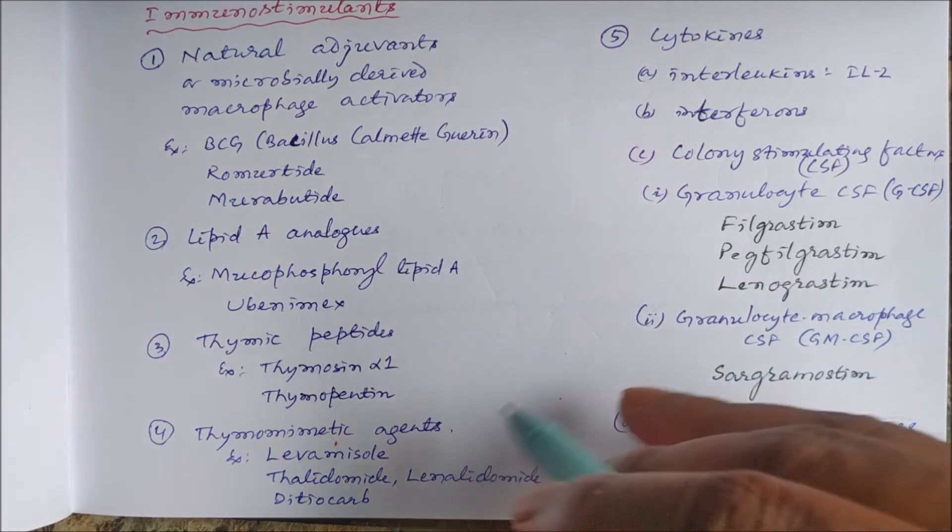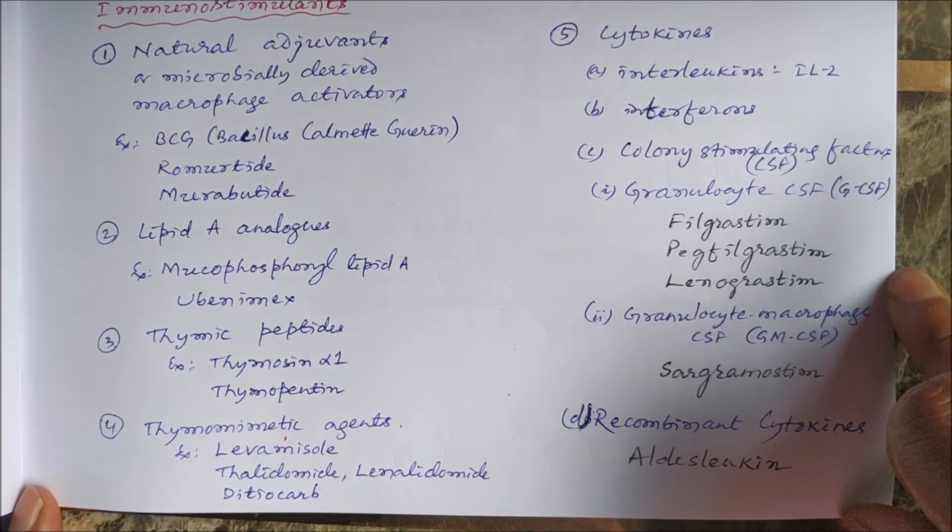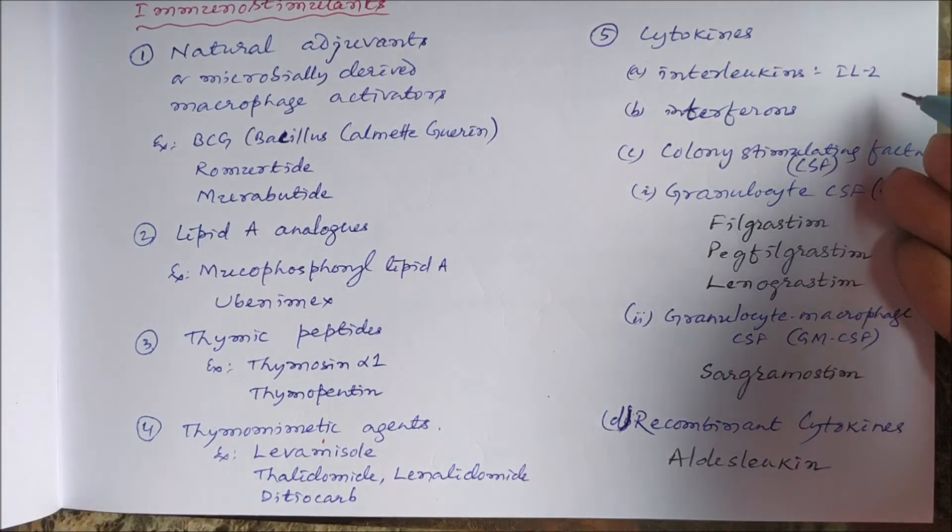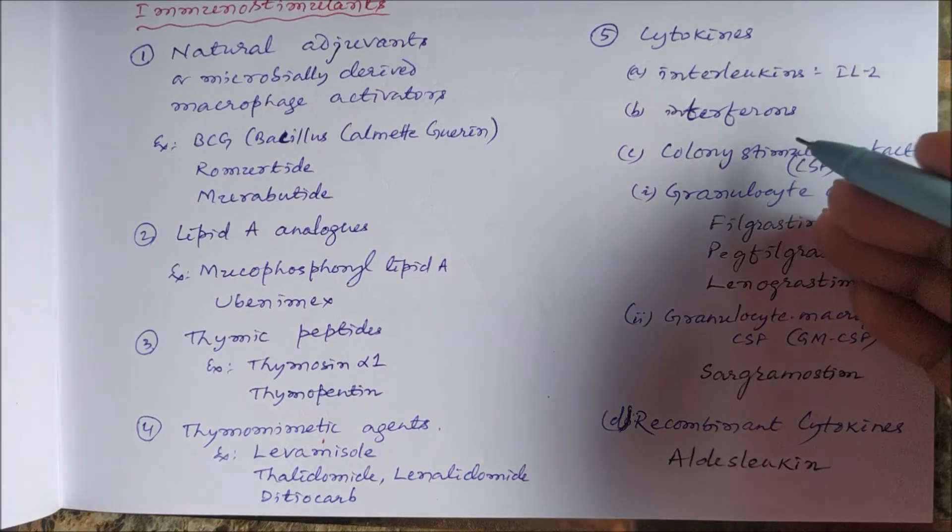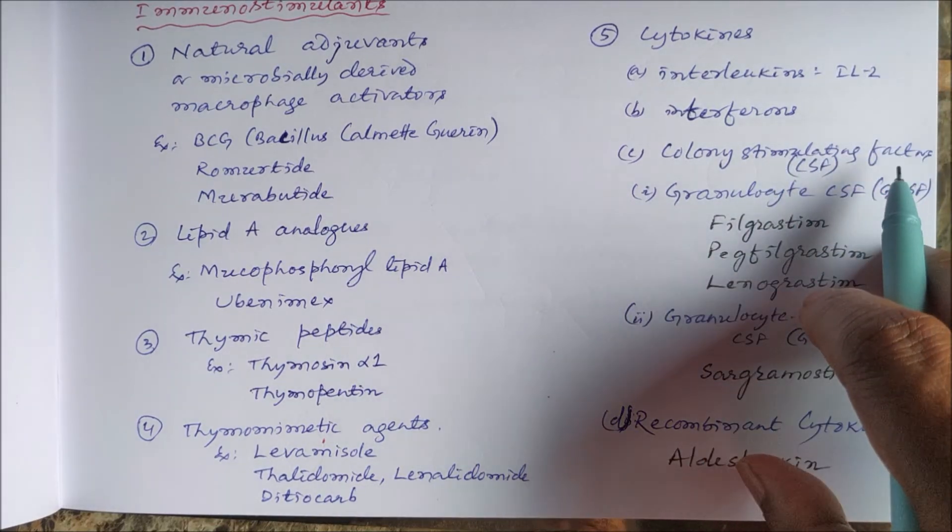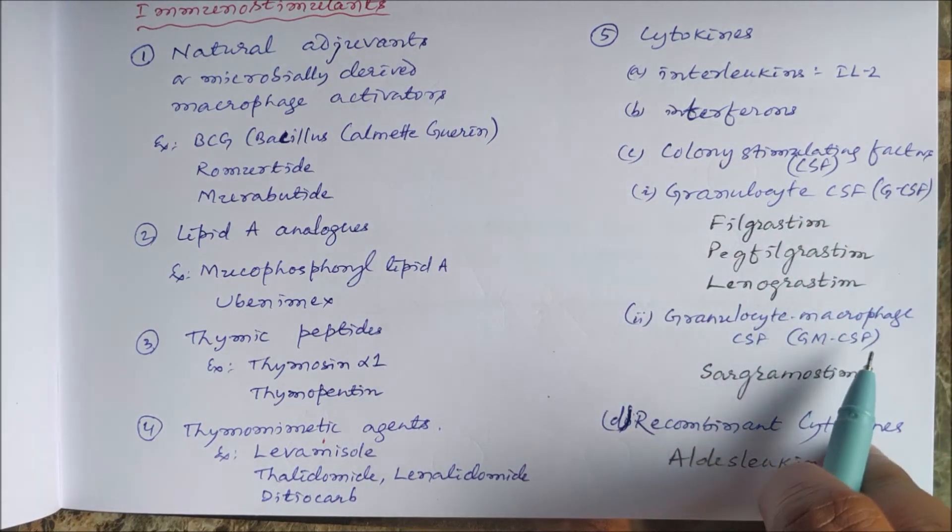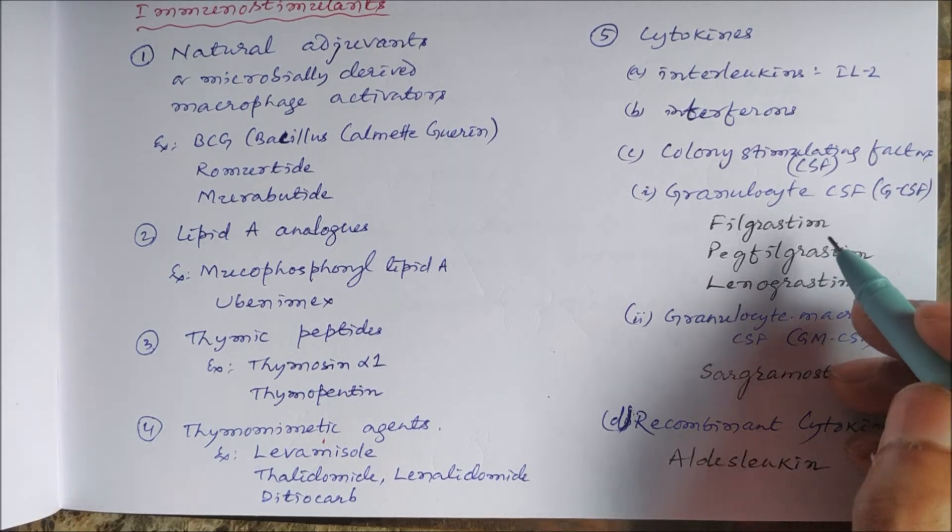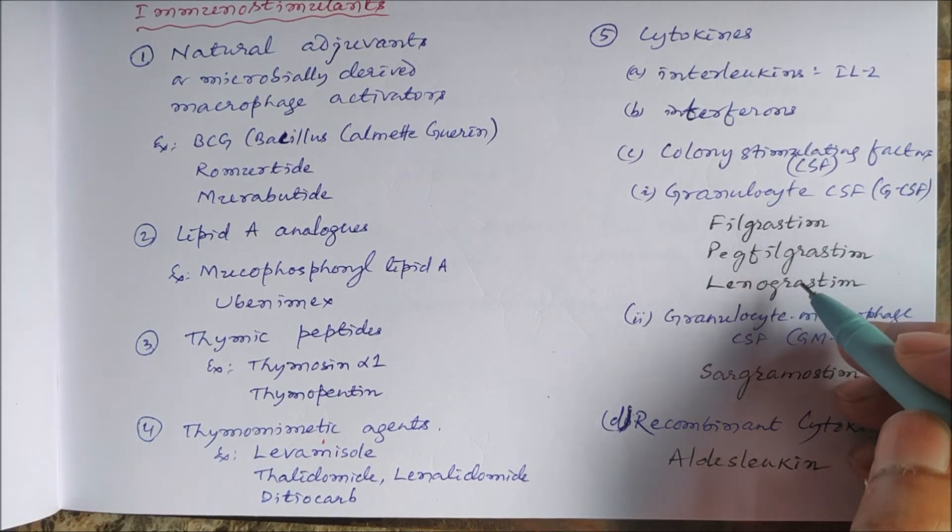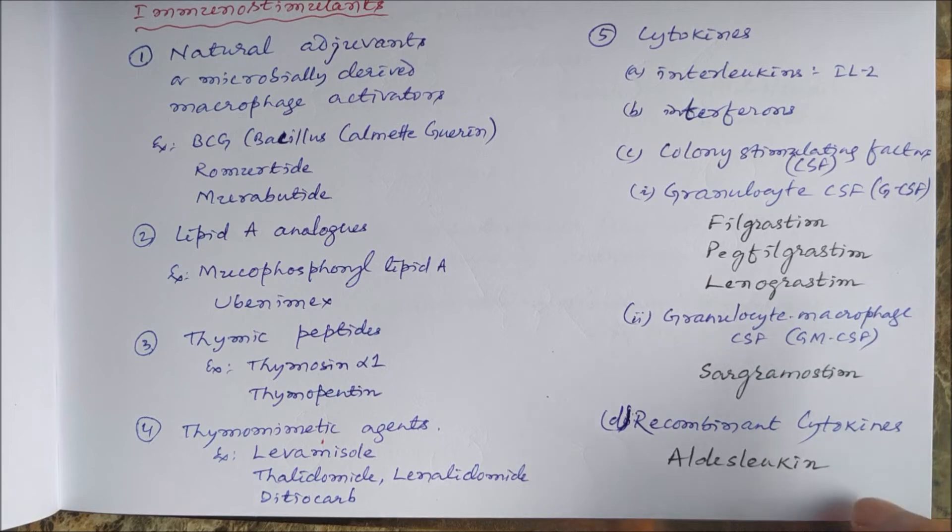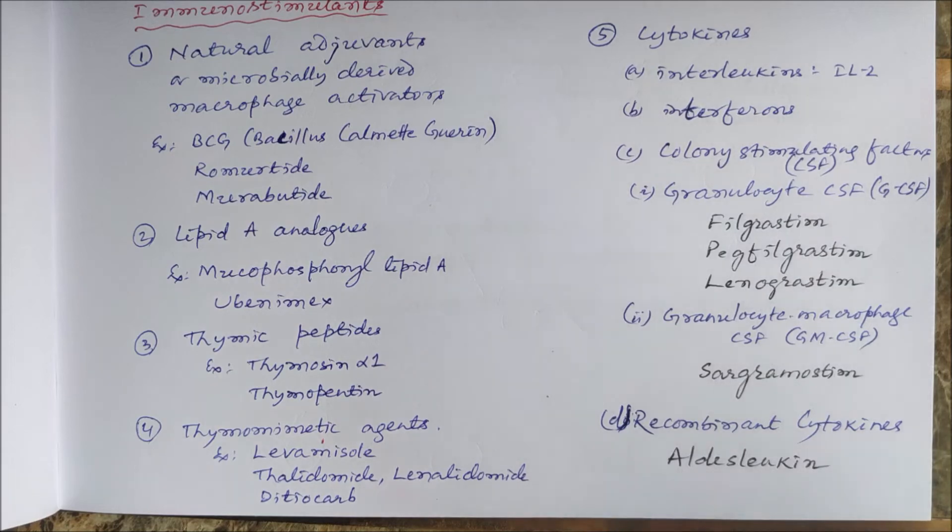Or we can give cytokines like interleukins including interleukin-2, interferons, colony stimulating factors which may be either granulocyte colony stimulating factor or granulocyte macrophage colony stimulating factors. Examples of granulocyte colony stimulating factors like filgrastim, and there are some recombinant cytokines like aldesleukin. So all these drugs are used as immunostimulants.